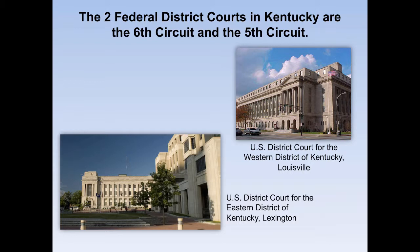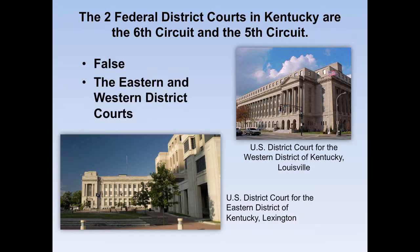Next question: there are two federal district courts in Kentucky — the Sixth Circuit and the Fifth Circuit. If you read quickly, you'll see that's false. What we have is the Eastern and Western District Courts. The Western District sits in Louisville and the Eastern District sits in Lexington, with some satellite offices around — but those are the two main branches of federal court in Kentucky.